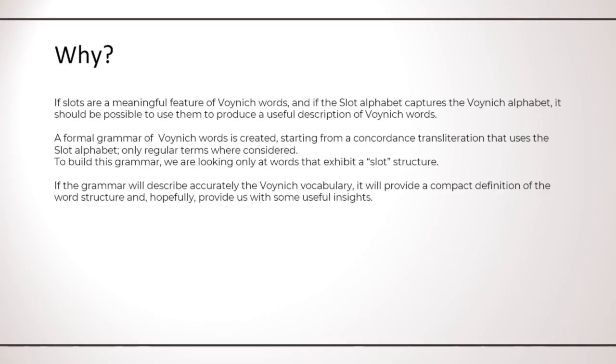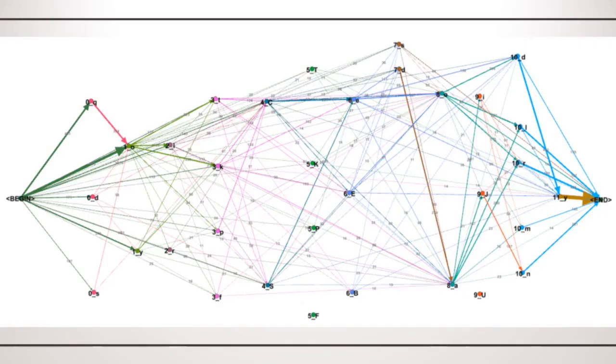So as a next step, I created a formal grammar, starting from a concordance transliteration created using the slot alphabet, and taking in consideration only regular words that exhibit a slot structure. Here you can see a graph showing characters appearing in each slot.